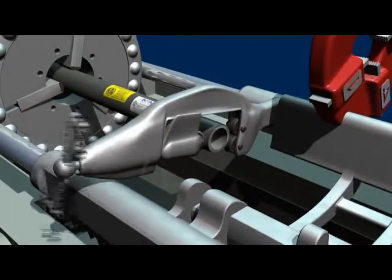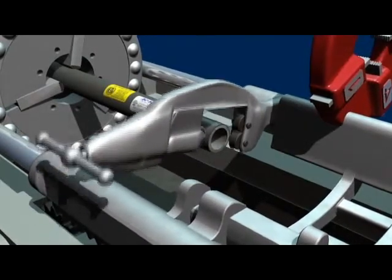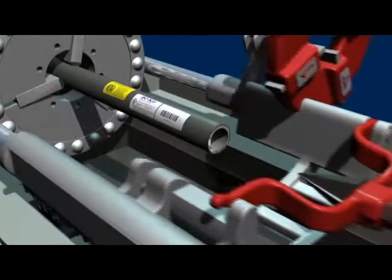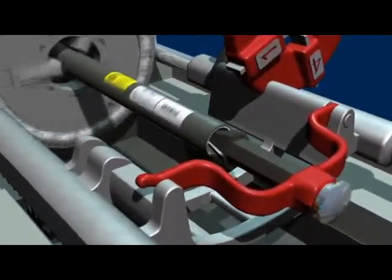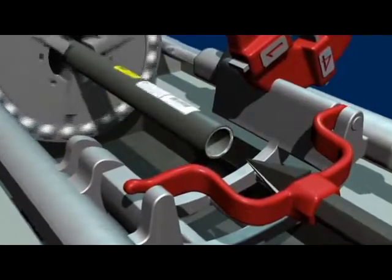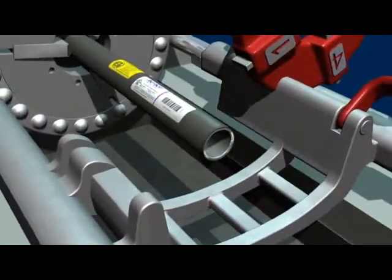Use a reamer to remove any rough edges caused by the cutting operation. This ensures that the wire pulled through the conduit will not be damaged. Conventional manual or power saws may be used to cut conduit.